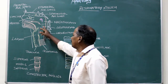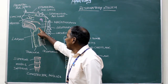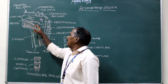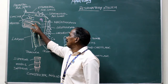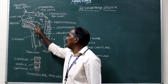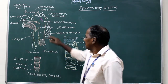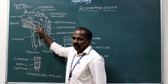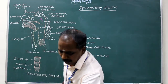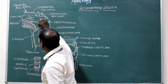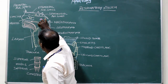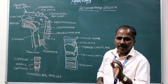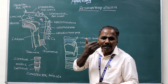Oropharynx: It extends from the lower end of the soft palate to the upper end of the epiglottis. Anteriorly, it communicates with the oral cavity through the oropharyngeal isthmus. Inferiorly, it communicates with the laryngopharynx. In the lateral wall of the oropharynx, near its anterior part, there is a collection of lymphatic tissue known as the palatine tonsil.